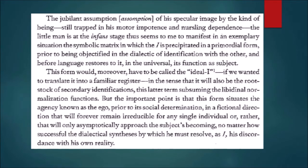During the mirror stage, the child is at the infant stage, trapped in his motor impotence and nursling dependence. The child experiences his body as incomplete and fragmented. However, the image in the mirror is the image of a whole body, a complete entity. The child manifests in an exemplary situation the symbolic matrix in which the I is precipitated in a primordial form prior to being objectified in the dialectic of identification with the other, and before language restores to it its function as subject.